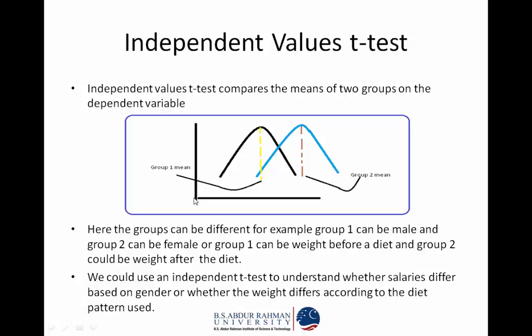For example, the dependent variable could be weights and the independent variable could be gender. The variation in the values of the dependent variable — weights — across the two genders is being checked and analyzed. We want to know whether these two groups are different or the same.